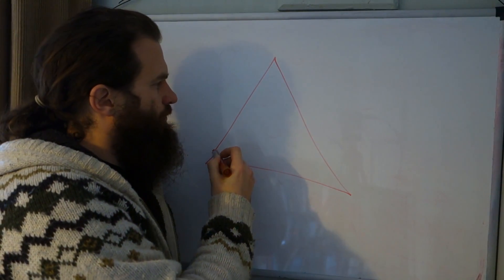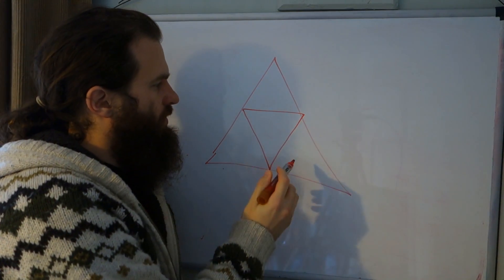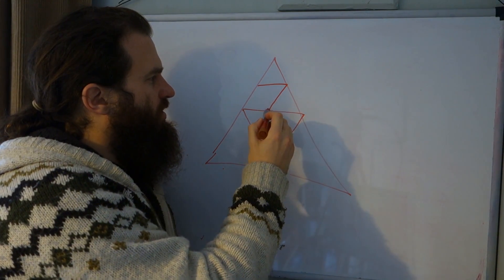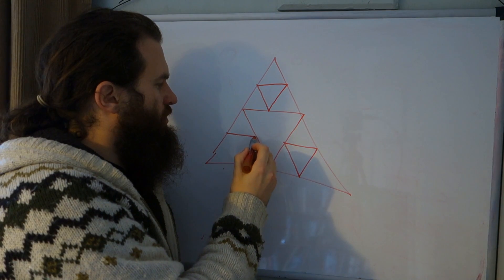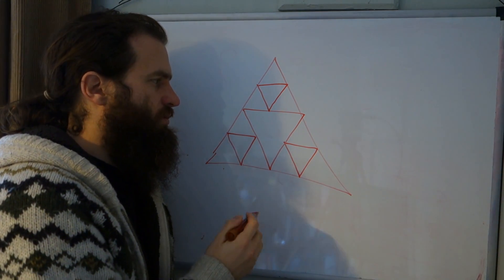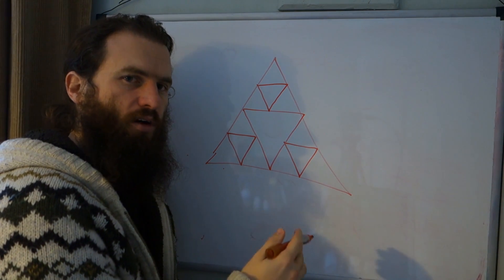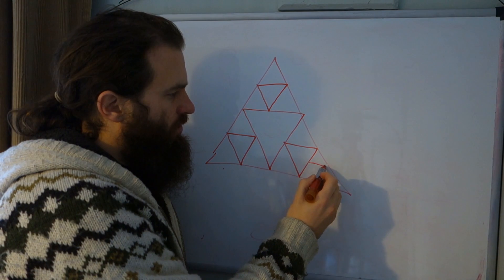So we start with the triangle, and then we draw another triangle, an upside down triangle in it, and then that gives us three new triangles, and we repeat this process. So this is our kind of iterative function. So we can get a Sierpinski triangle in different ways. In this case we're kind of explicitly drawing it, whereas with our chaos game we were filling it in using randomness.